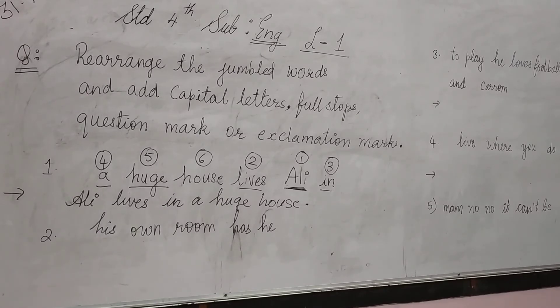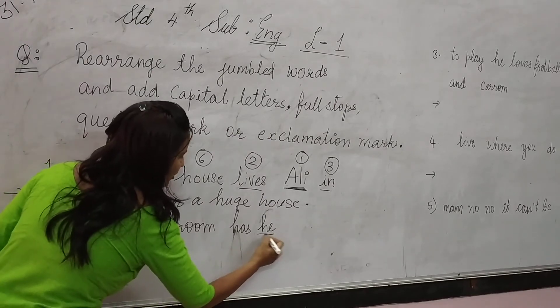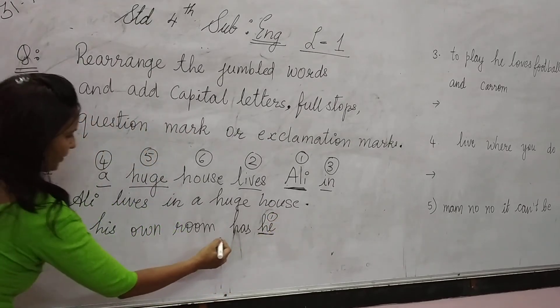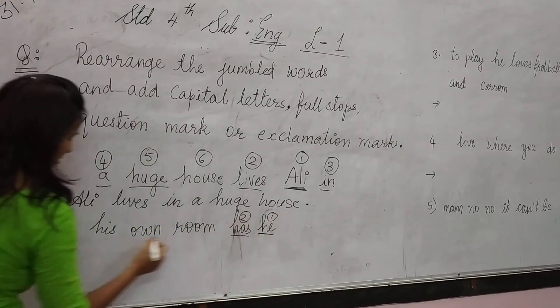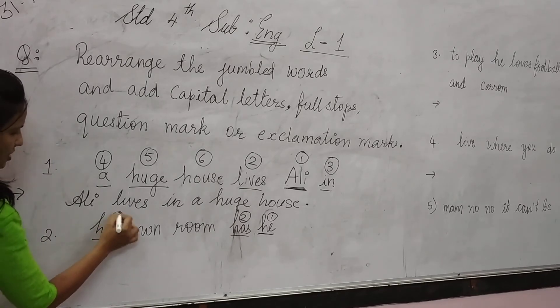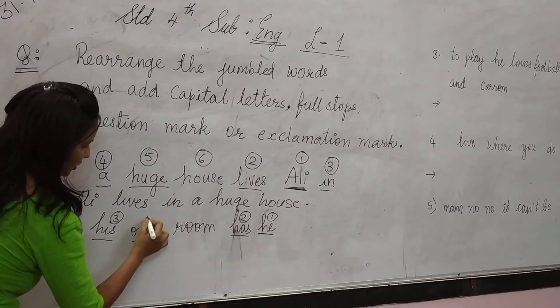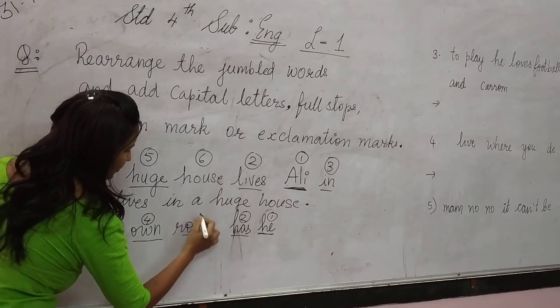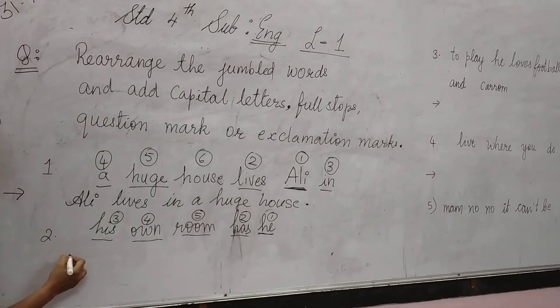His own room has he. First, number one: he. Second: has. Third: his. Fourth: own. And fifth: room. I will start.